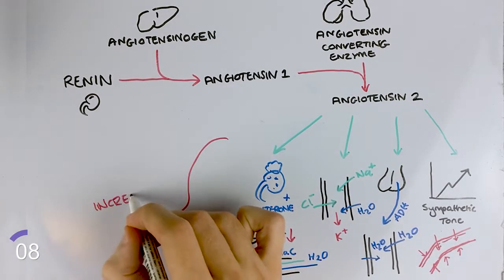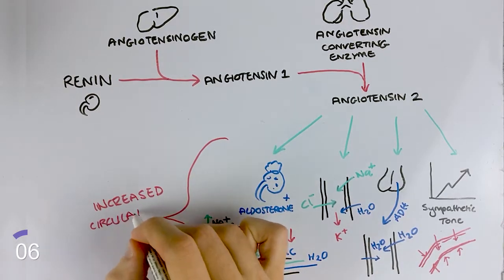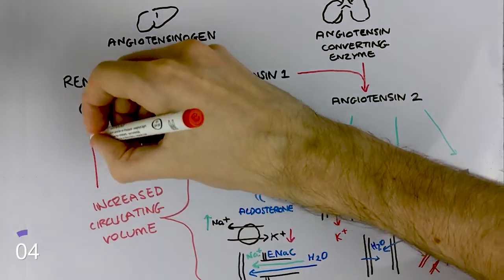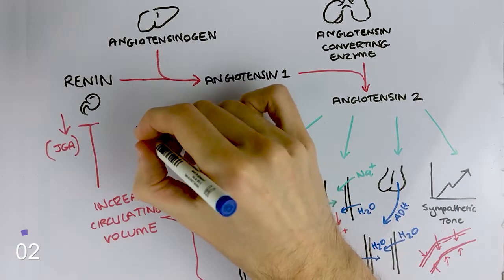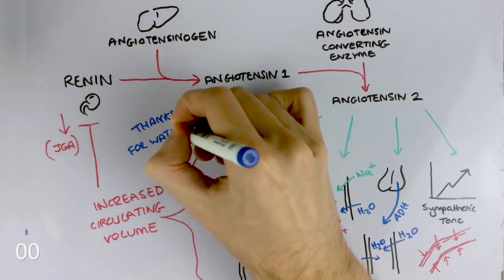The combined effect of all these processes increases the perfusion pressure of the juxtaglomerular apparatus, in turn decreasing the amount of renin produced via negative feedback, and the cycle repeats.